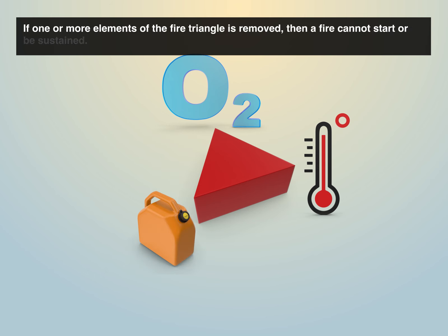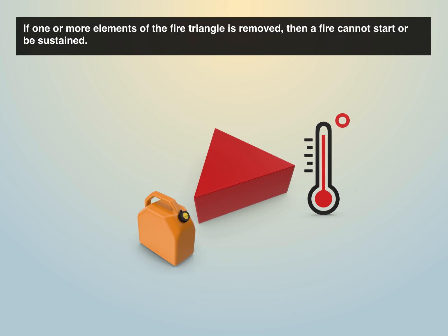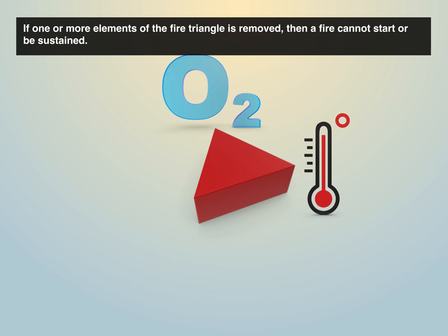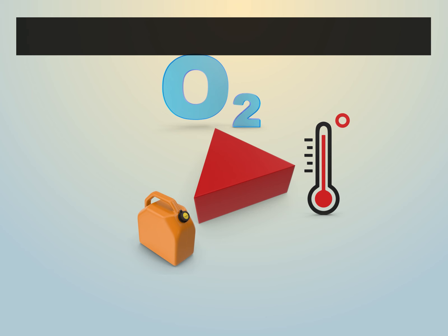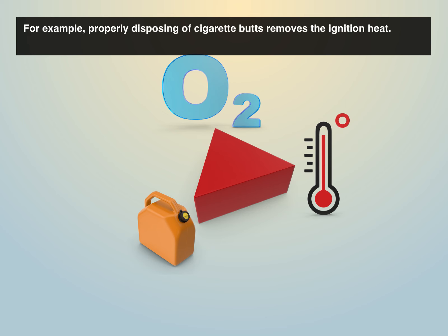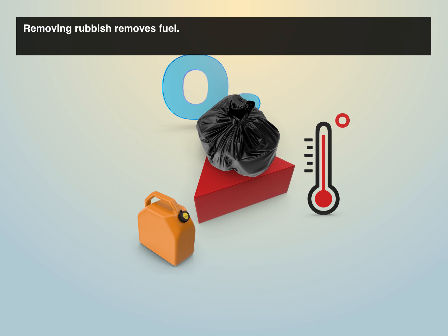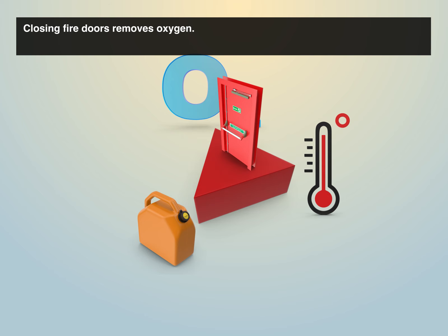If one or more elements of the fire triangle is removed, then a fire cannot start or be sustained. For example, properly disposing of cigarette butts removes ignition heat. Removing rubbish removes fuel. Closing fire doors removes oxygen.